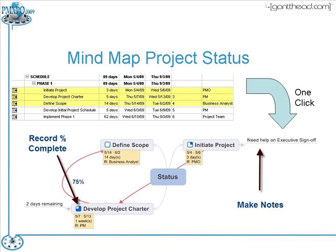In this case, I've exported three tasks: defining scope, initiate the project, and developing the project charter. It already has the individual dates and resources. Now I can have a discussion with the team and update the progress — you see little squares where, for example, the 'develop charter' node is 75% complete and 'initiate project' is 25% complete. What I really like is using this to capture notes about that particular task, which can then feed into a project status report or a formal project management system.